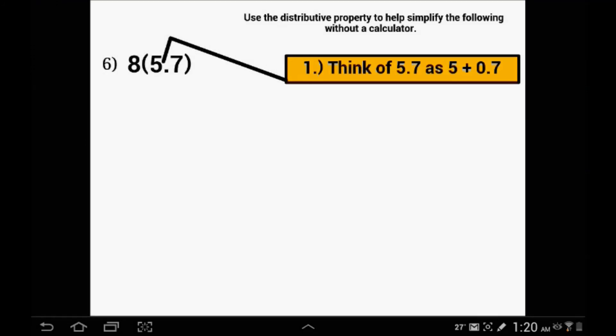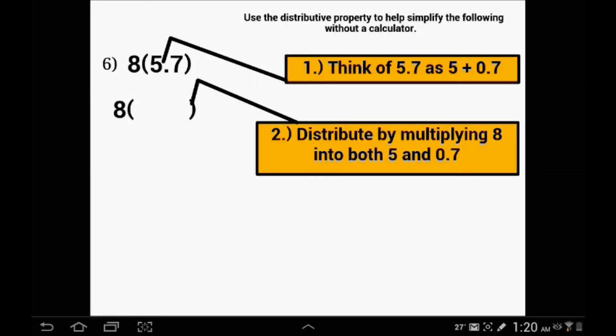Here is another one: 8 times 5.7. We are going to break up 5.7 into 5 plus 7 tenths. The biggest mistake I see with these kind of problems is that people do not always put the decimal. Remember this is 5 and this is 7 tenths. Some people write 5 plus 7, which equals 12. This number is not 12, this is 5.7. Make sure your addition matches up.